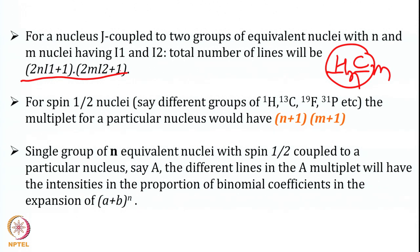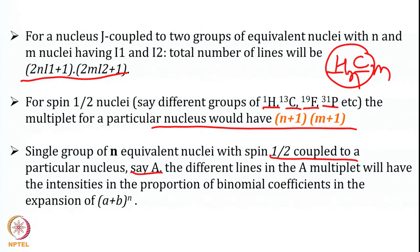For spin-1/2 nuclei such as proton, carbon-13, F-19, and P-31, the multiplicity for two separate groups is (N + 1)(M + 1). For a single group of N equivalent spin-1/2 nuclei coupled to nucleus A, the different lines in the A multiplet have intensities proportional to the binomial coefficients of the expansion (A + B)^N.